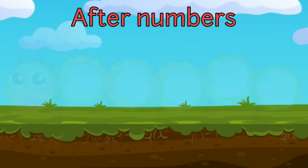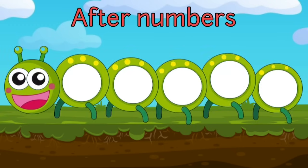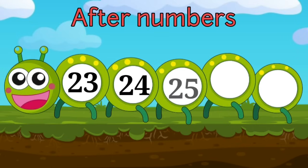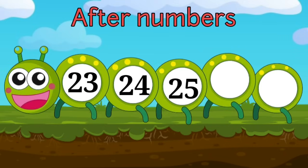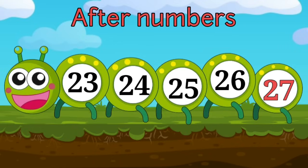Now children, do you see this caterpillar? In this caterpillar we have 23, 24, 25, 26. Now which number will come after 26? After 26 is 27. Always remember, in after numbers the number always increases and is bigger than the previous number.